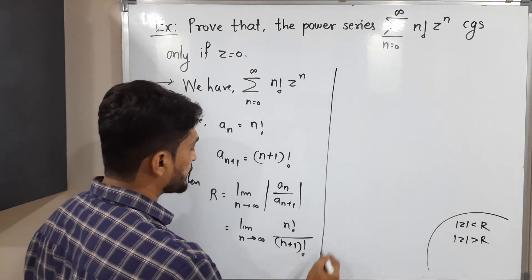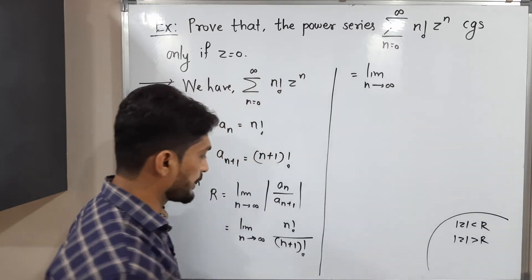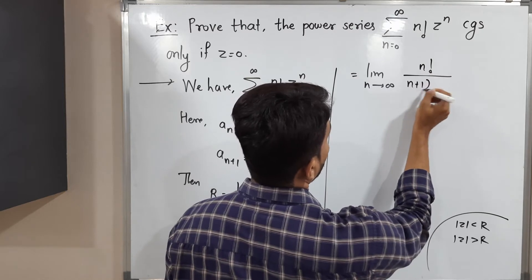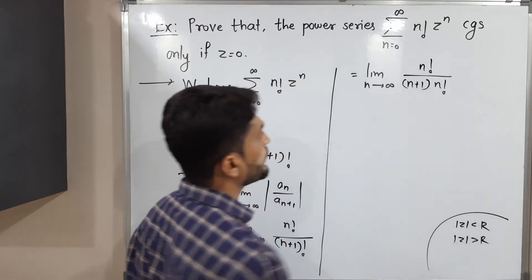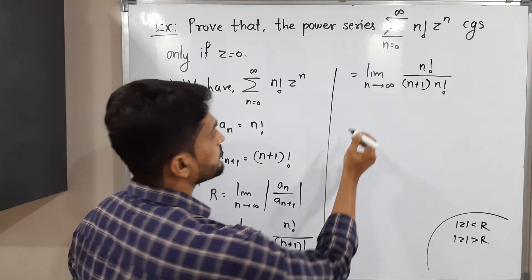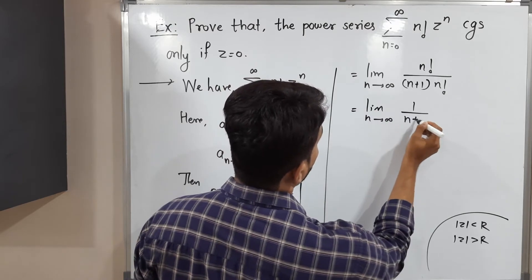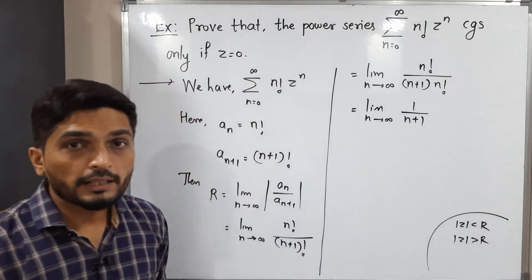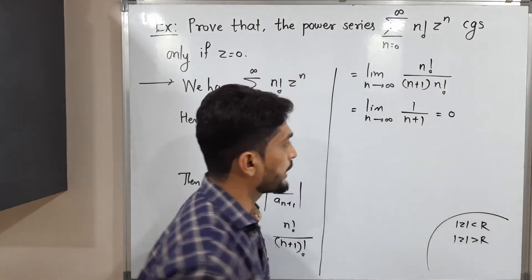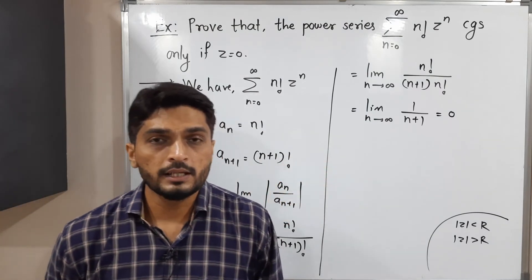Let us simplify further. We have the limit as n tends to infinity of n-factorial divided by (n+1)-factorial. We can write (n+1)-factorial as (n+1) times n-factorial, so n-factorial cancels. This gives limit as n tends to infinity of 1/(n+1), which equals 1/infinity, which is 0. So the radius of convergence is 0.